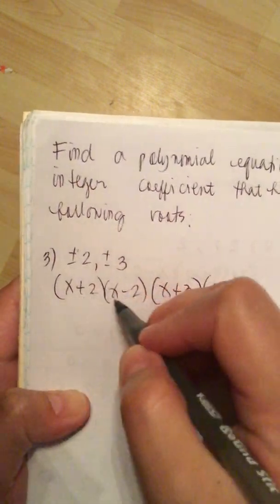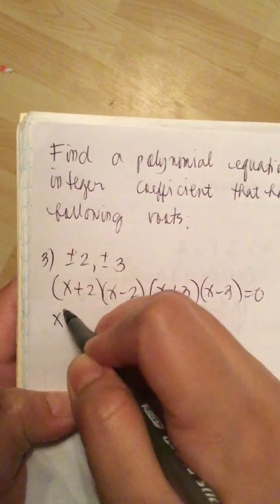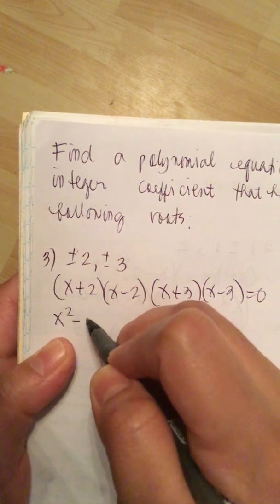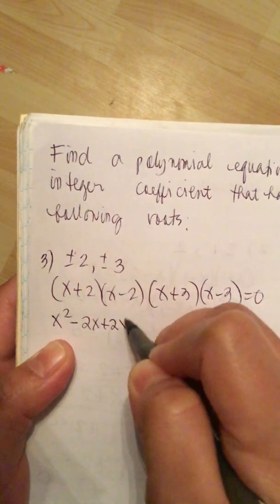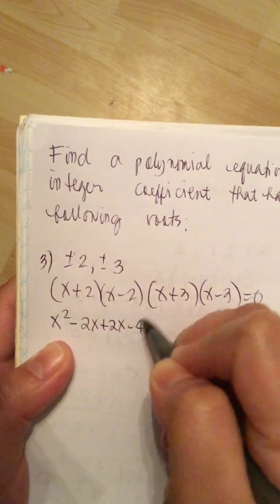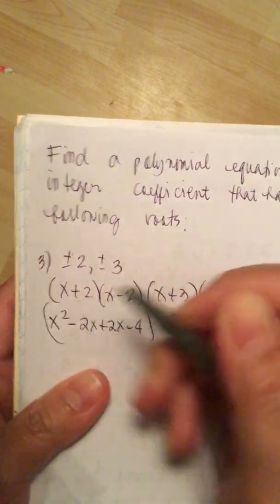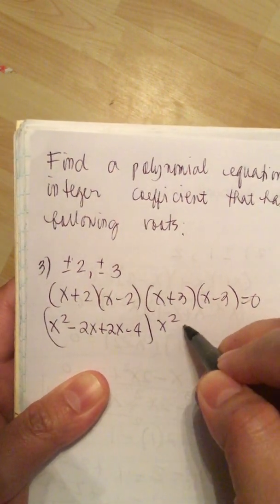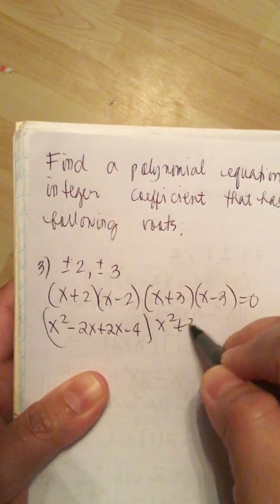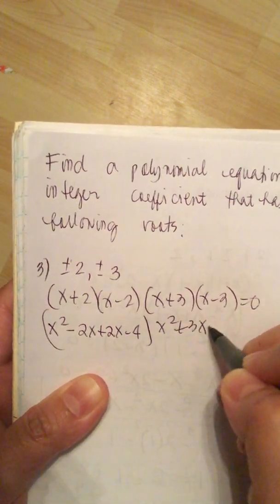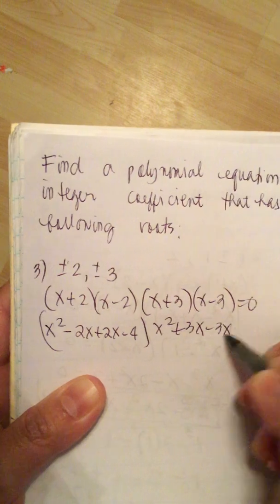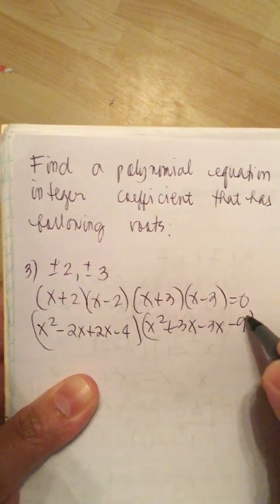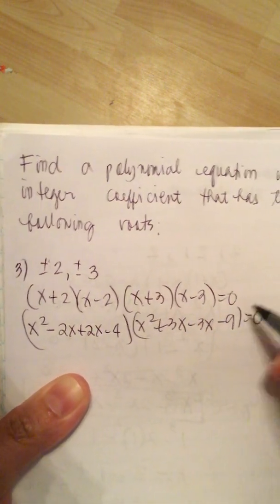We multiply the first two: x squared minus 2x plus 2x minus 4. Now the second two: x squared plus 3x minus 3x minus 9 equals 0.